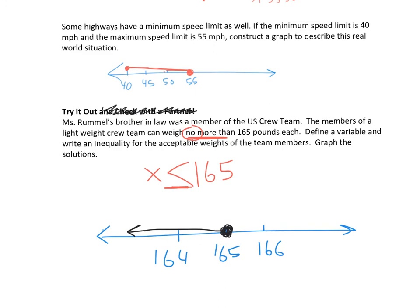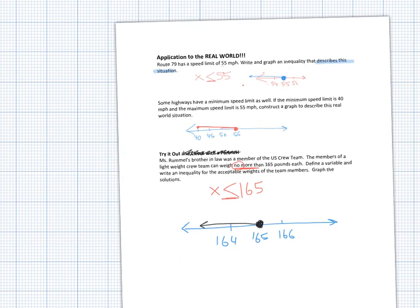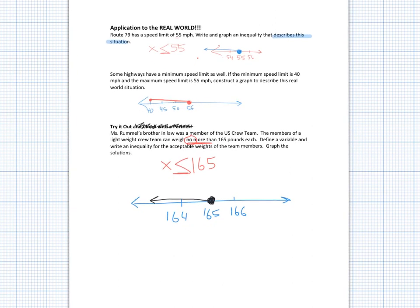That's it on writing and graphing inequalities. We did some word problems, talked about how to look at a number line and identify the inequality, and how to determine what type of dot to use and which way the arrow goes. Go ahead and try your homework, and when you're done, move on to the next lesson.